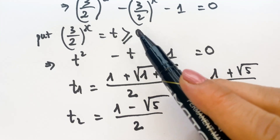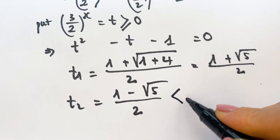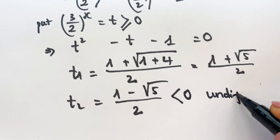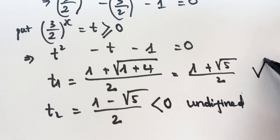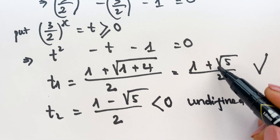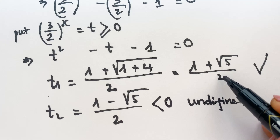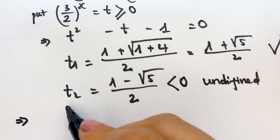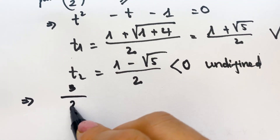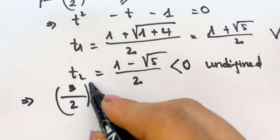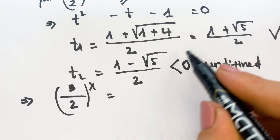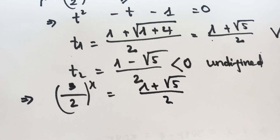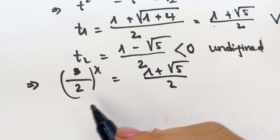So we need to apply the requirement that t must be greater than 0. Therefore t2 equals (1 minus square root of 5) over 2 is less than 0, so it is rejected. And so, we have t equals (1 plus square root of 5) over 2. Therefore, we can have (3 over 2) power x equals (1 plus square root of 5) over 2.